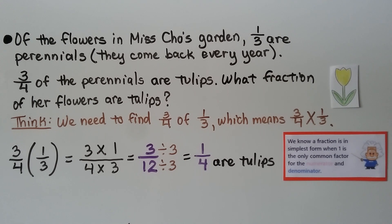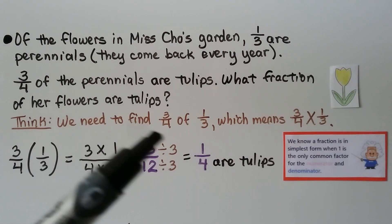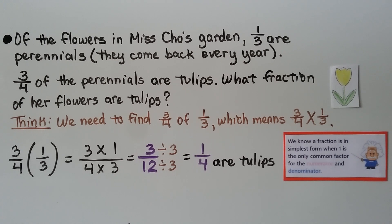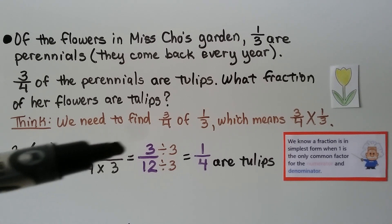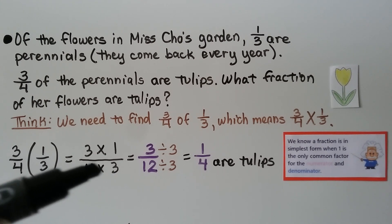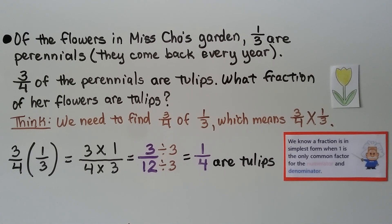Of the flowers in Miss Cho's garden, 1 third are perennials — that means they come back every year. 3 fourths of the perennials are tulips. What fraction of her flowers are tulips? We need to find 3 fourths of 1 third. 1 third are perennials and 3 fourths of them are tulips, so we need 3 fourths times 1 third. We multiply the numerators: 3 times 1 is 3. We multiply the denominators: 4 times 3 is 12. We divide by the greatest common factor, which is 3, and we get 1 fourth are tulips. We know the fraction is in simplest form when 1 is the only common factor for the numerator and denominator.